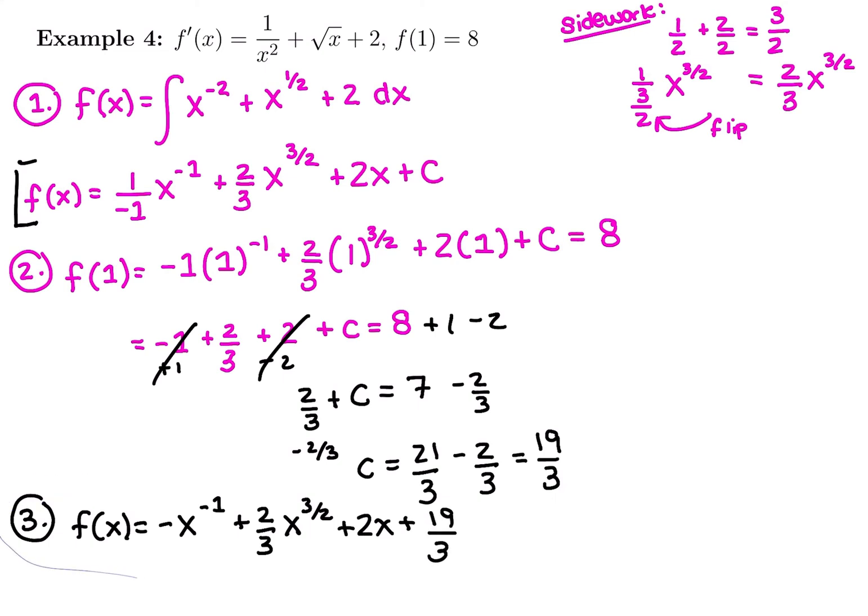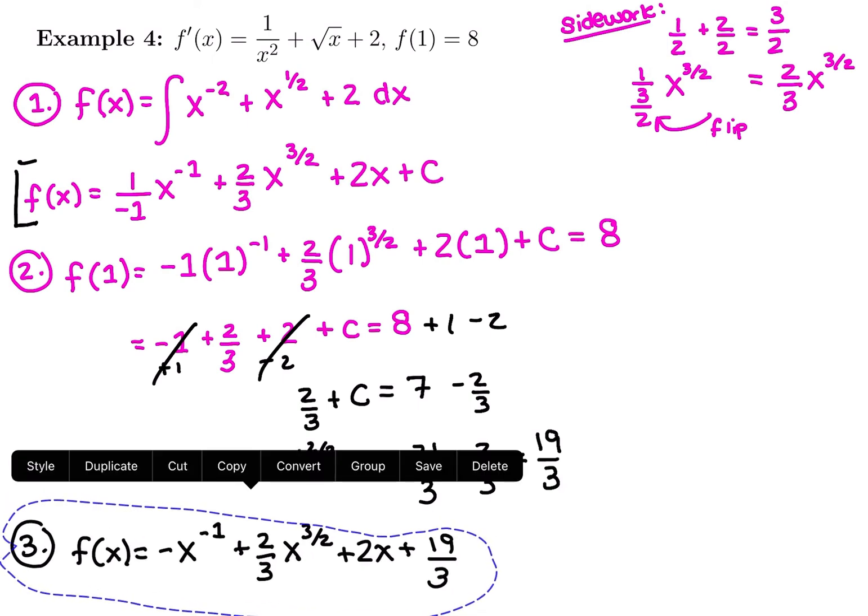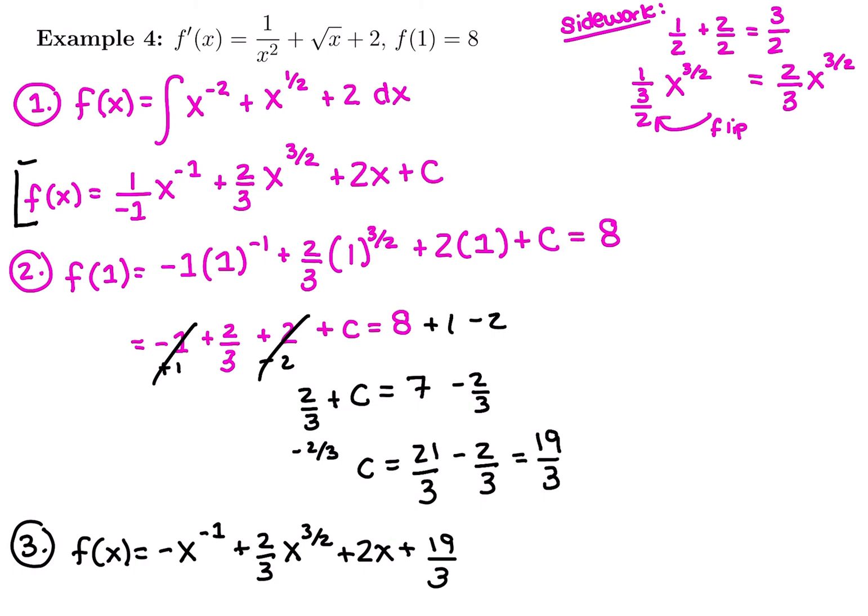There's my final function that we just found. Has a derivative of what was given and has the point 1 comma 8 on it. And you can always take the derivative to check that we got the antiderivative correct and plug in 1 on your calculator to this and make sure the y value you get out is 8 if you need to check these.